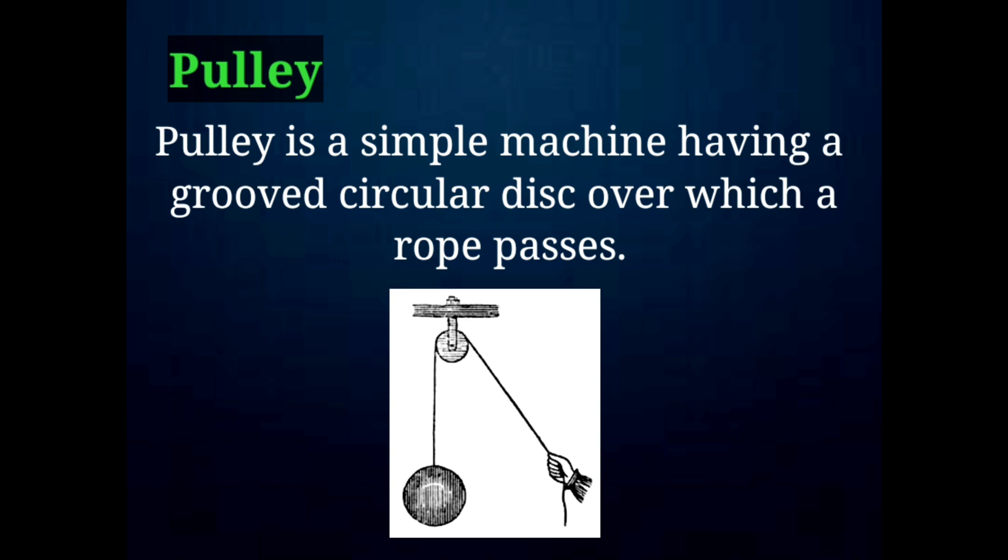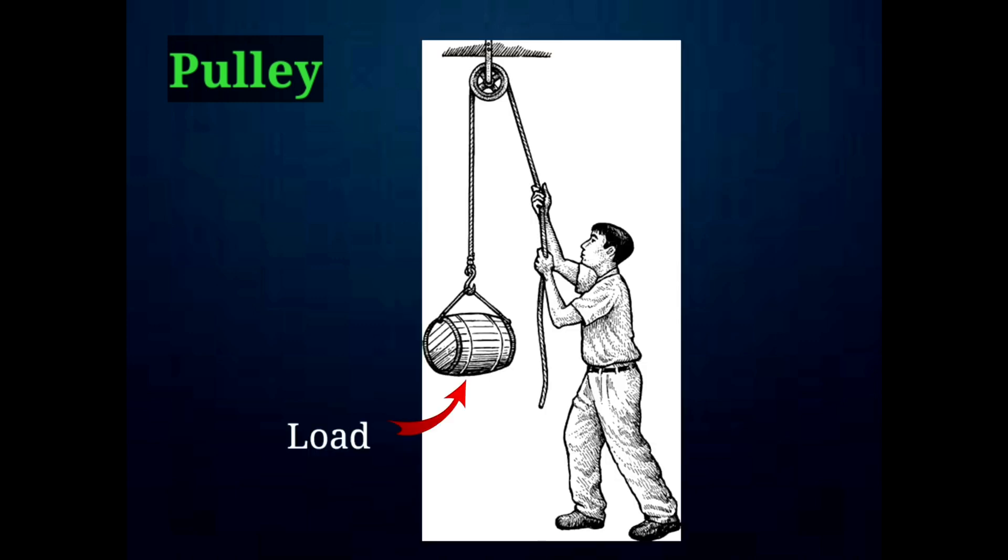It consists of a circular disc with a groove and a rope. The load is attached to one end of the rope and effort is applied to another end of the rope. It helps us to multiply force and change the direction of force.